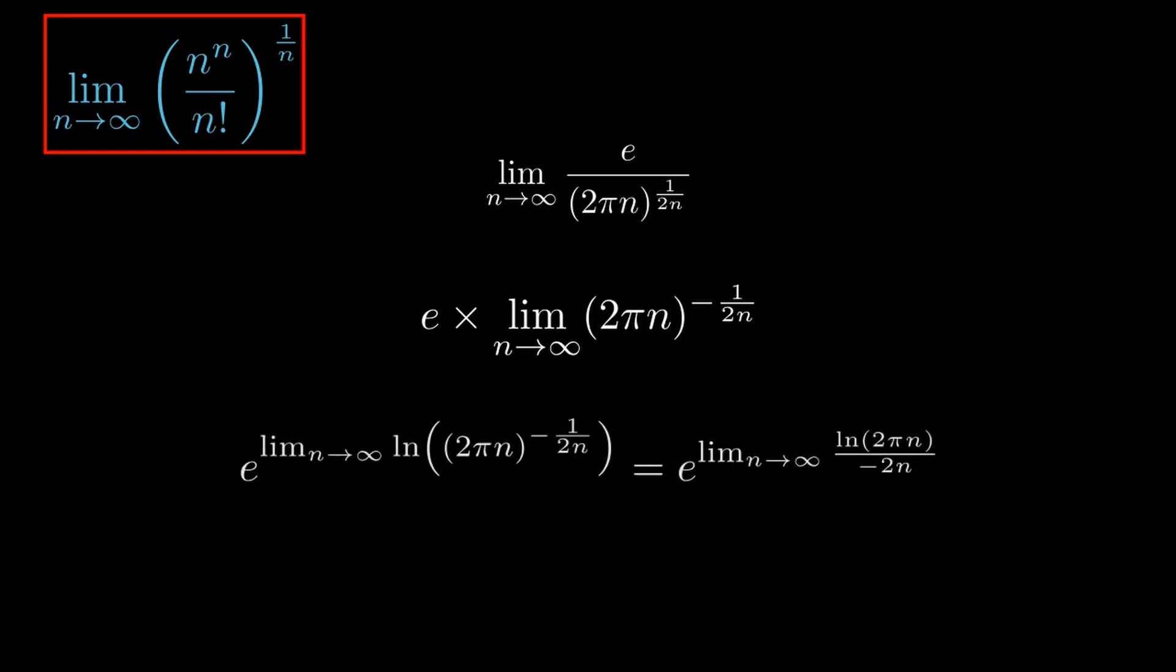Now, just focusing on the terms inside the limit, if we raise the limit to e to the natural logarithm and pass the limit inside the exponential, which we can do as it's continuous, this allows us to rewrite our limit as e raised to the limit as n goes to infinity of the natural logarithm of 2πn divided by minus 2n.